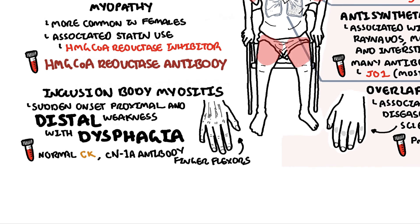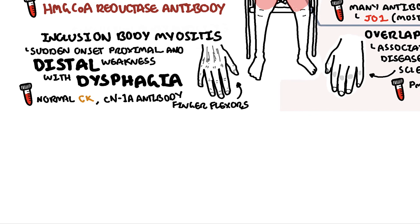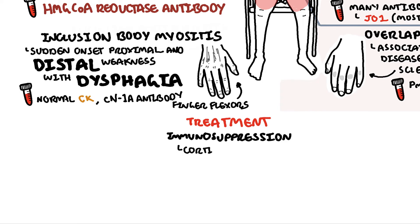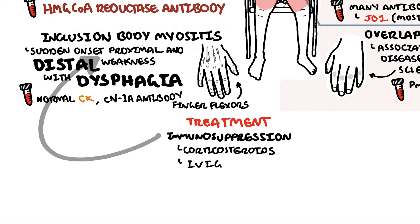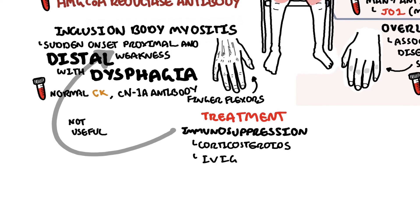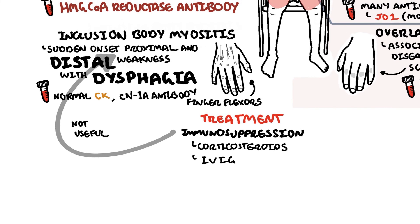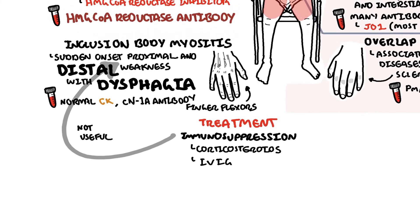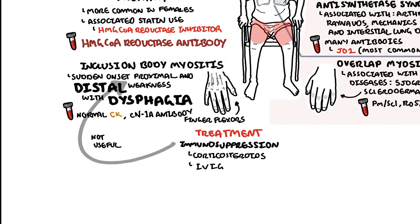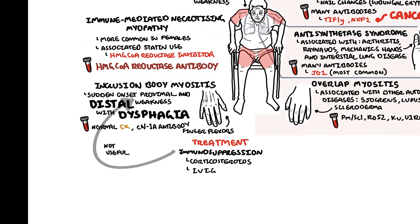Treatment of all these inflammatory myopathies includes immunosuppression in the form of corticosteroids, followed by intravenous immunoglobulins or other immunosuppressants. Notably, inclusion body myositis is a type that does not respond to immunosuppression. An important final point is that muscles also help with breathing and swallowing, so in these inflammatory myositis conditions, it can also cause poor respiratory effort, difficulty breathing, and dysphagia.